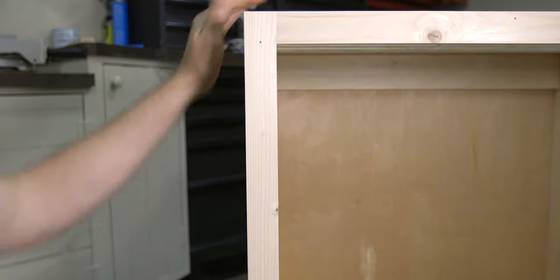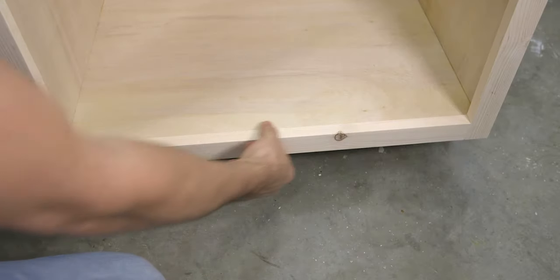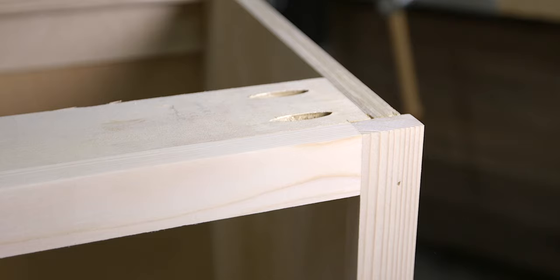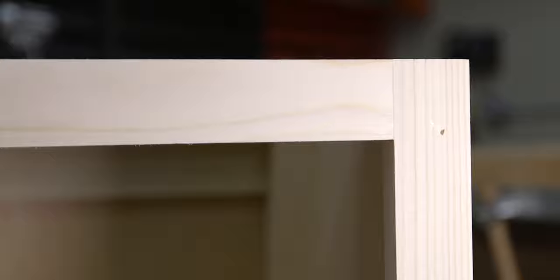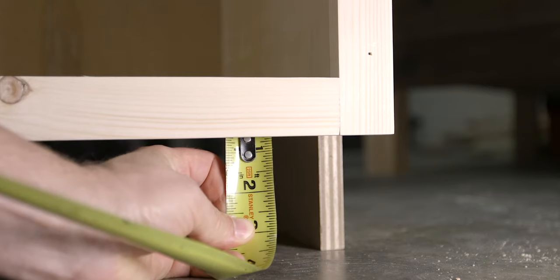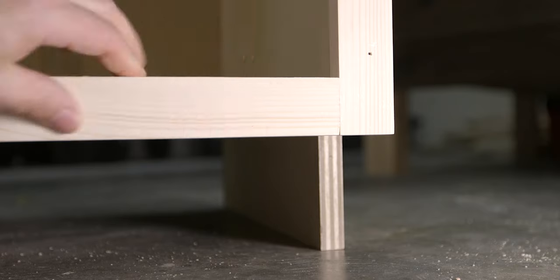However, the overhang for the top and bottom rails will be different from the styles and different from each other. The top rail sits flush with the top of the cabinet leaving a three quarter inch reveal on the inside, while the bottom rail overhangs the cabinet by about five eighths of an inch and leaves an eighth of an inch for an inside reveal.